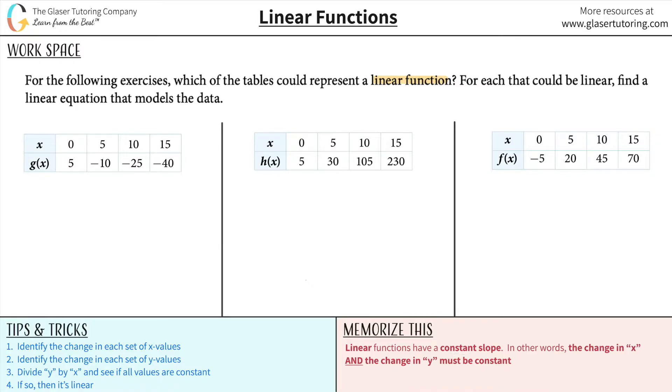is that linear functions have a constant slope. Okay, so basically what that means is that for every change in y and change in x, that if you were to, let's say, take those changes for a few pairs, it must be the same.